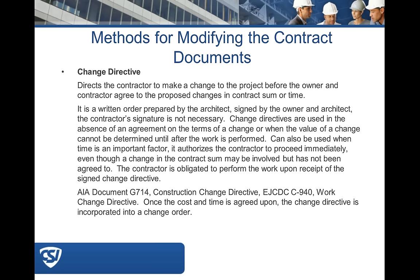We have a few questions. One commenter notes that on all their projects, the AE issues an ASI, but it actually should be a proposal request because it costs extra time and money — the AE depends on the contractor to determine if it's an extra. Another comment describes experience with change directives on three projects that ended up requiring the owner to go to court to recover money, which is why they lean toward Consensus Docs in those situations.